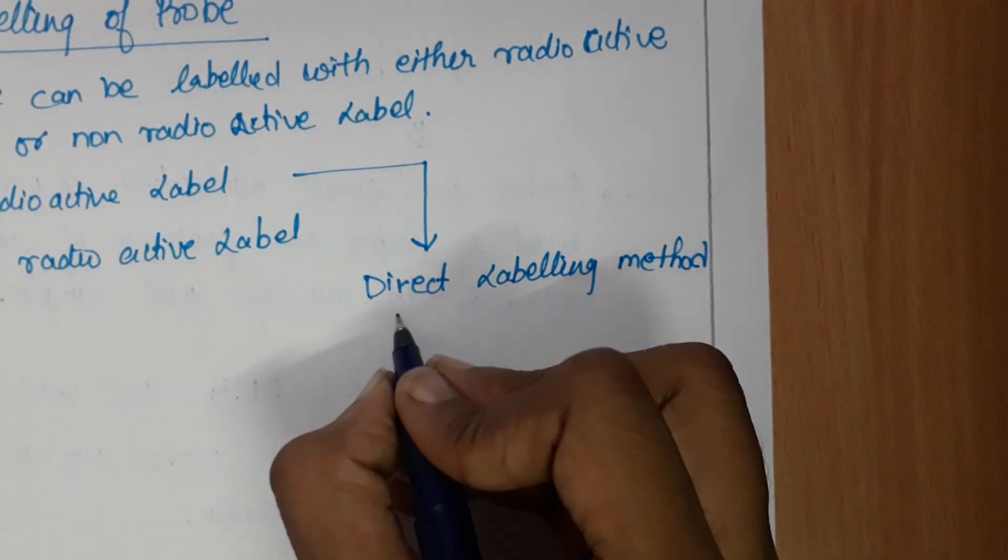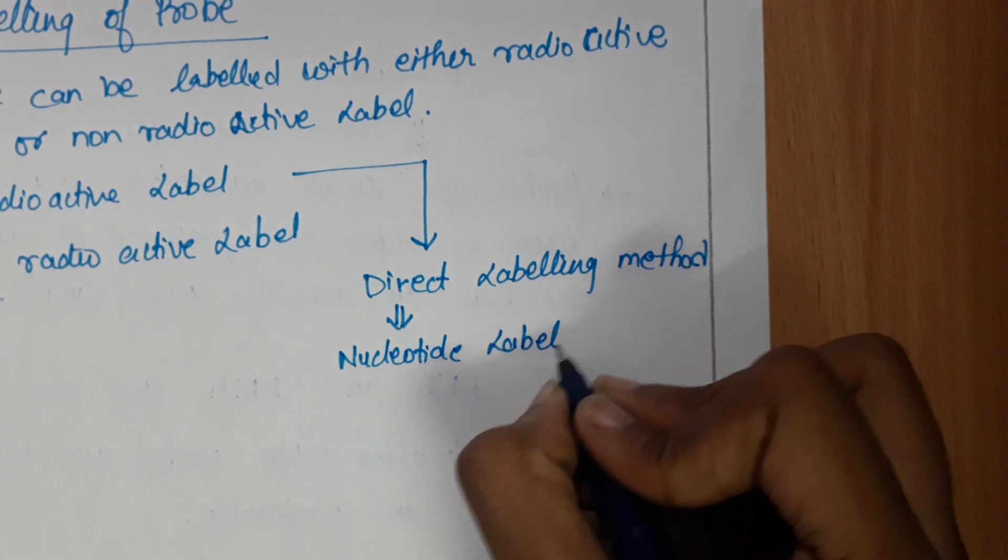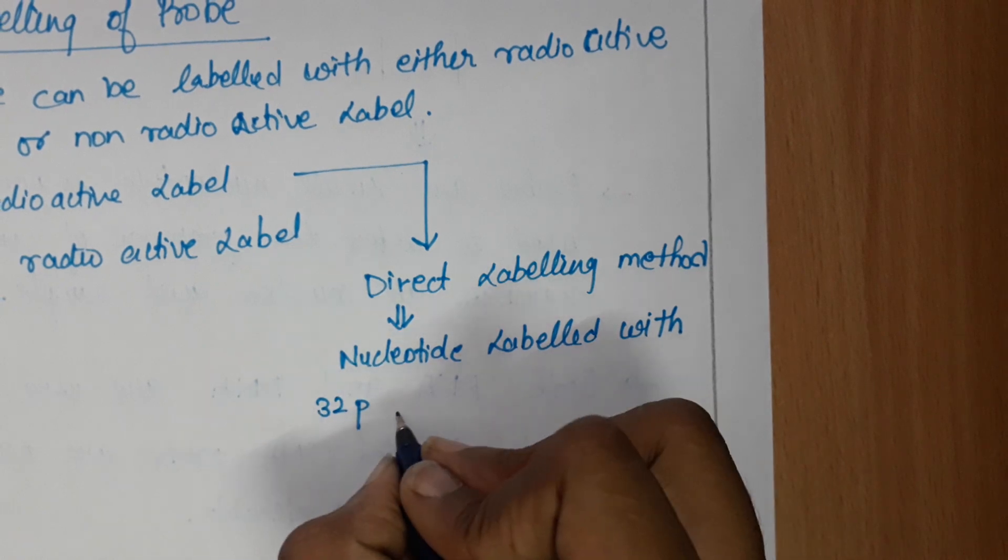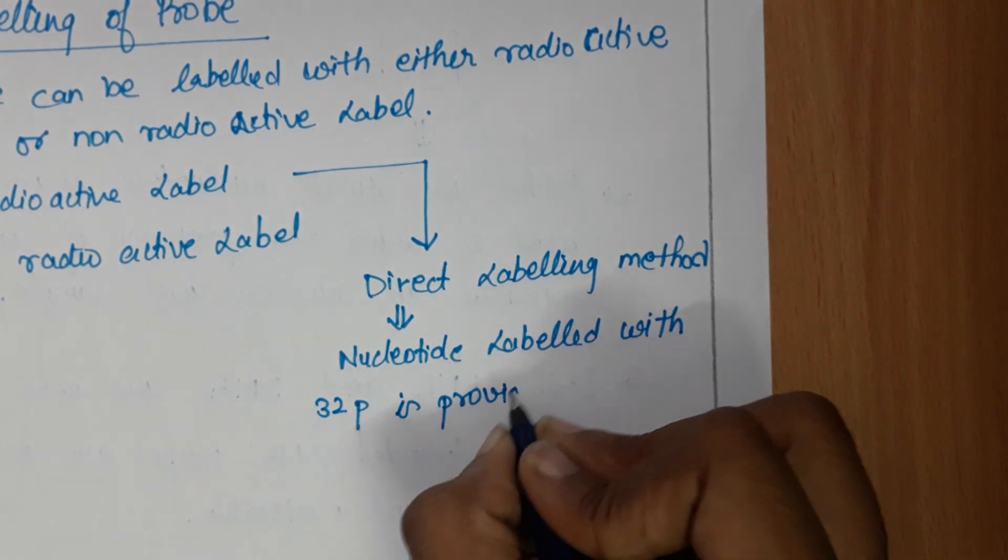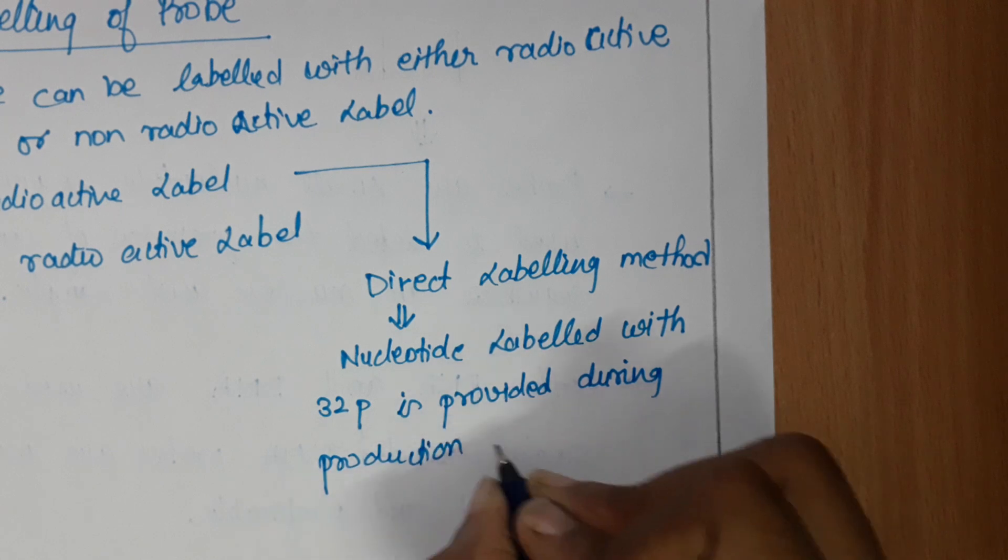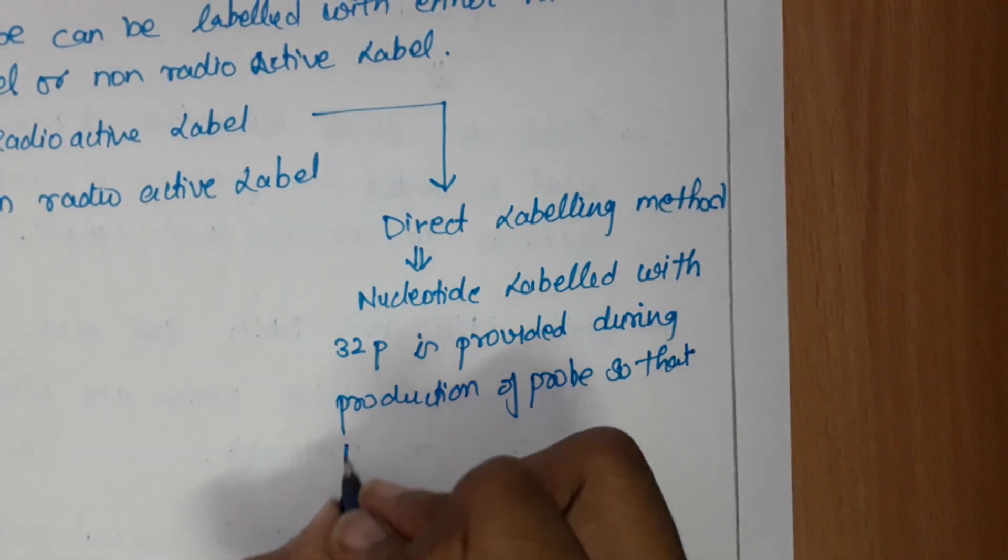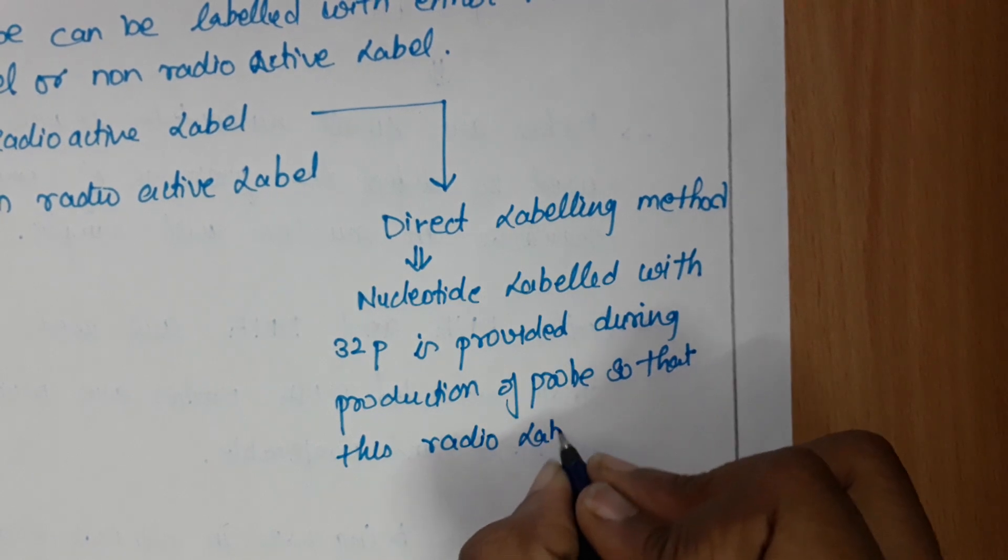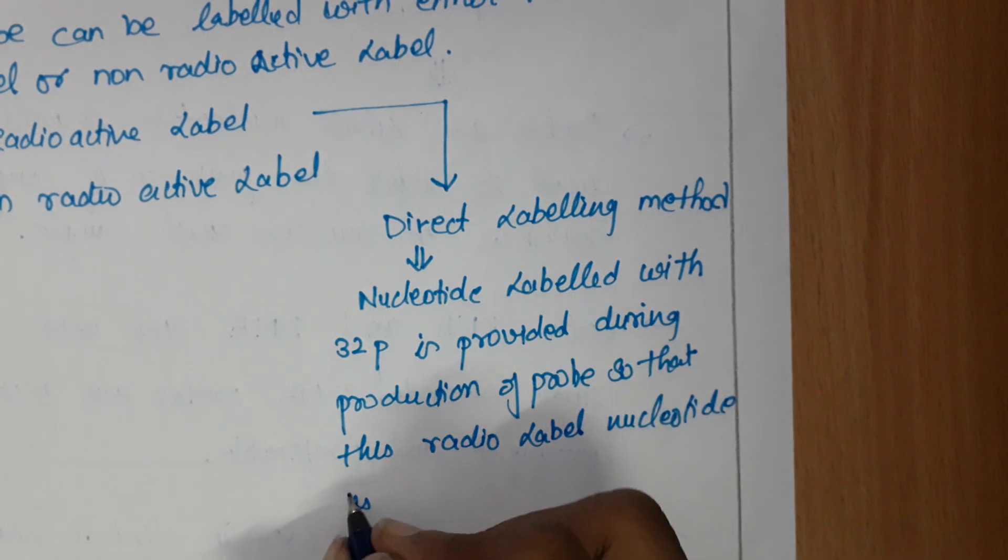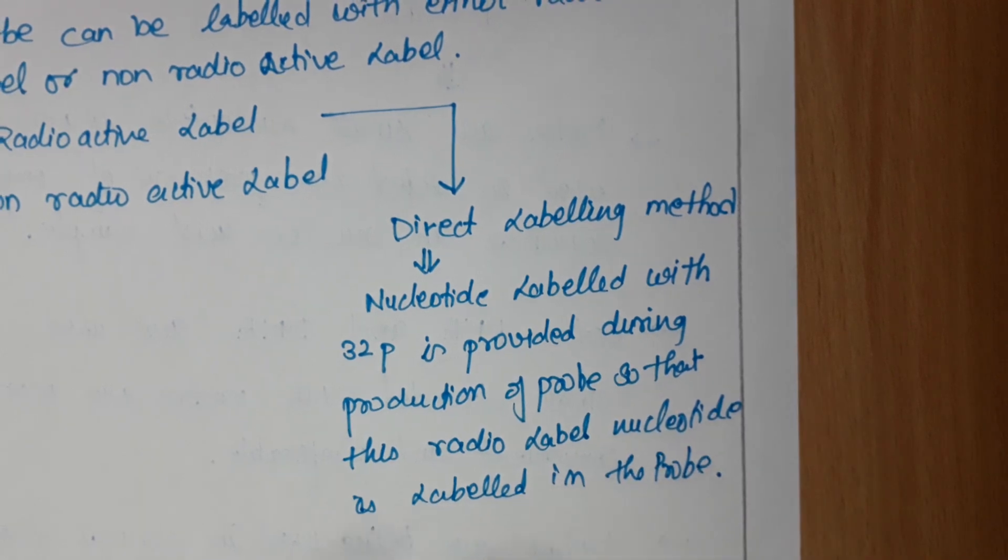In this method, nucleotides are labeled with phosphorus-32, which is provided during production of the probe so that the radiolabeled nucleotide is incorporated in the probe.